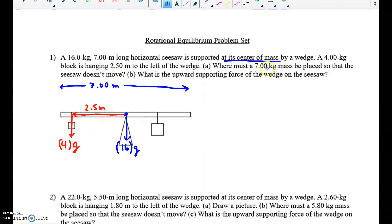Then we have the question, where must a 7 kilogram mass be placed? So this must be the 7 kilogram mass. So that the seesaw doesn't move. So it doesn't move. That means it's in total equilibrium, or static equilibrium is the fancy term. But it's in rotational equilibrium. The net torque is zero. And it's in translational equilibrium. The net force is zero.